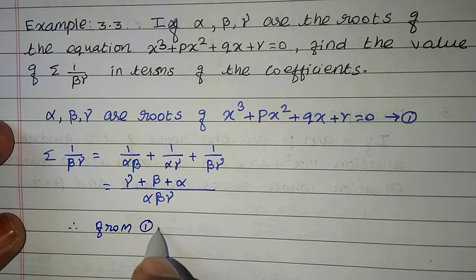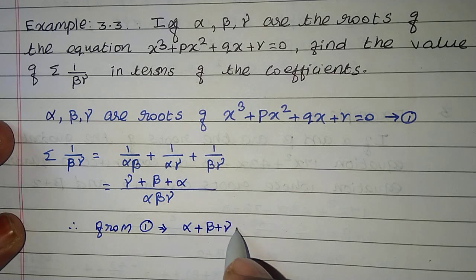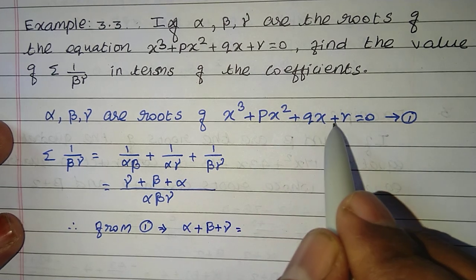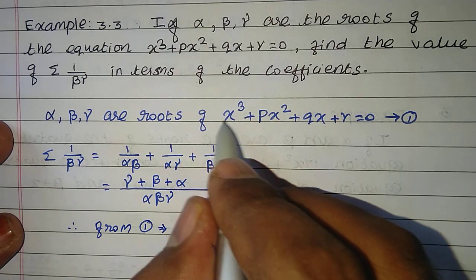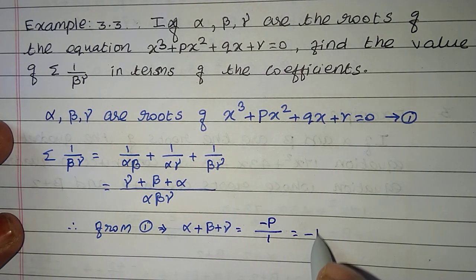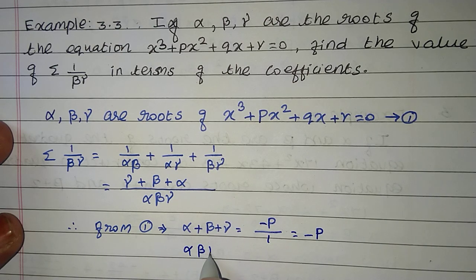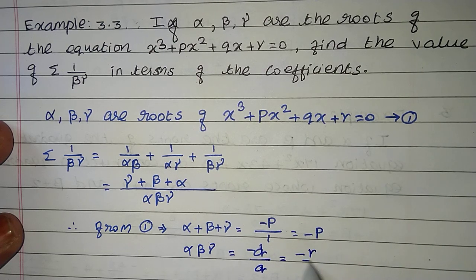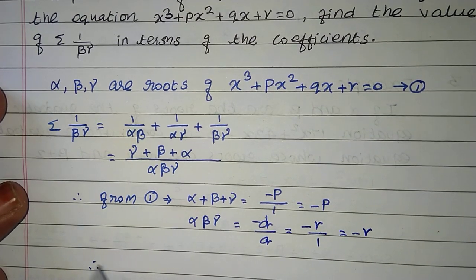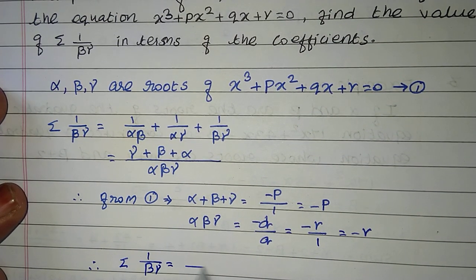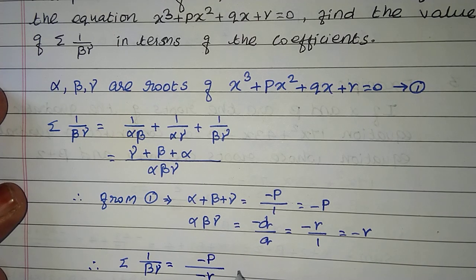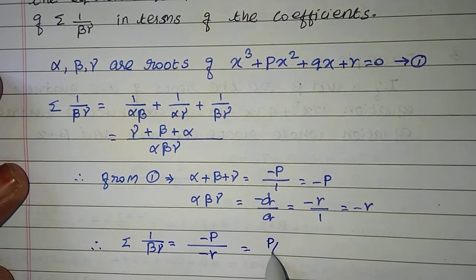From equation 1, using the general equation ax³ + bx² + cx + d = 0: alpha + beta + gamma = -p/1 = -p, and alpha beta gamma = -r/1 = -r. Therefore, summation 1 by beta gamma = (alpha + beta + gamma) / (alpha beta gamma) = -p / -r = p/r.